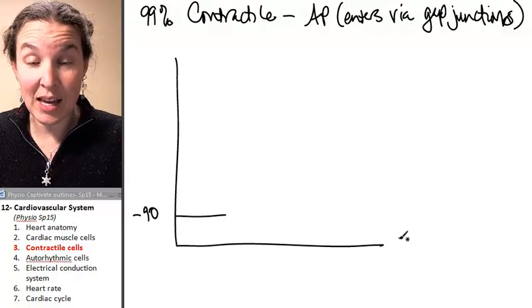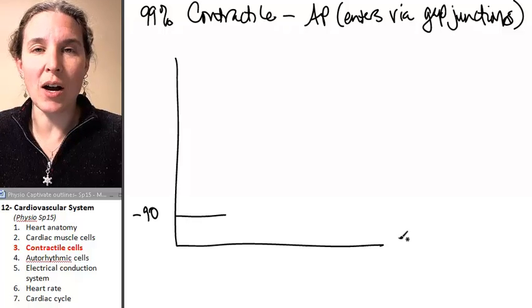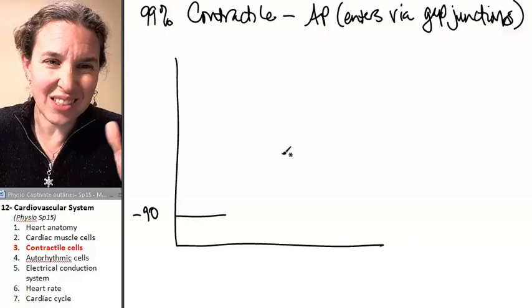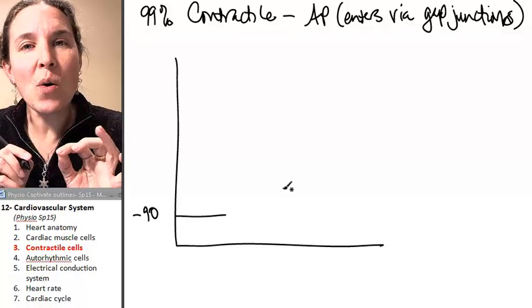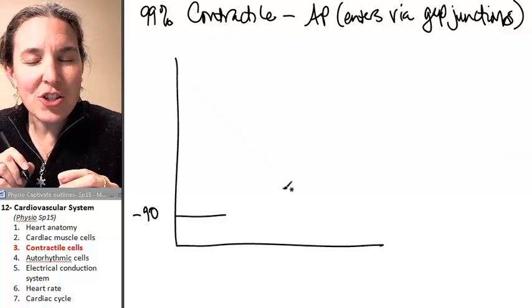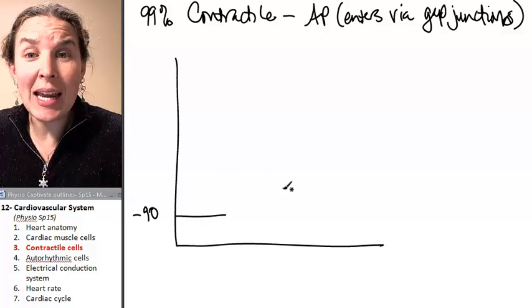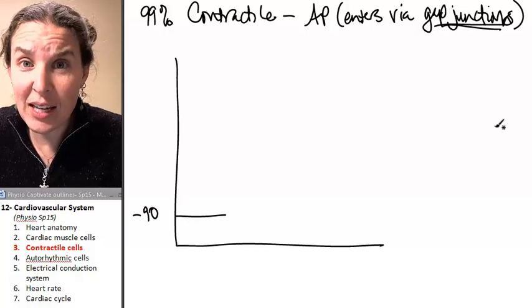we're hanging out at resting membrane potential, which in a contractile cell is negative 90 millivolts. That's different than my chilling somatic motor neuron, which is negative 70. There are some things that are different, but there's no stimulus. Notice the action potential is already happening and it enters through the gap junctions and the intercalated disks.